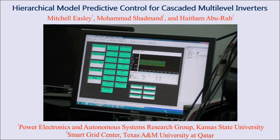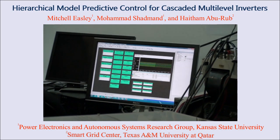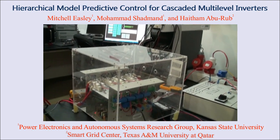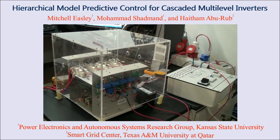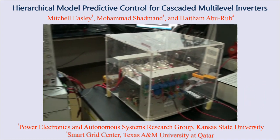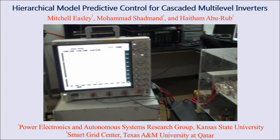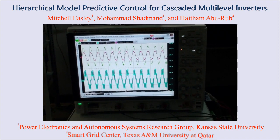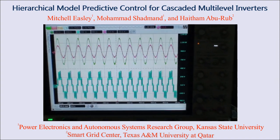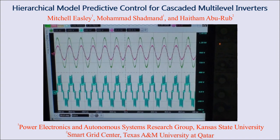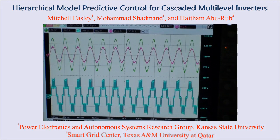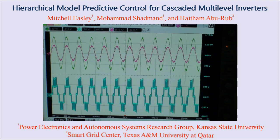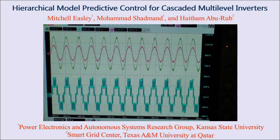I will now show how the grid-connected cascaded H-bridge maintains stability through multiple transients using hierarchical model predictive control. In the oscilloscope, the green signal is grid voltage, the purple signal is injected grid current, and the blue signal is the output voltage of the cascaded H-bridge. The DC link voltages are set to 190 volts. Currently, the power reference is 1 kilowatt.